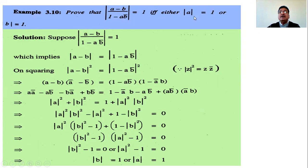Next example: prove that |(a - b)/(1 - ab̄)| = 1 if and only if |a| = 1 or |b| = 1. Since this is an 'if and only if' statement, the proof has two parts. Part 1: assume |(a - b)/(1 - ab̄)| = 1 and prove that either |a| = 1 or |b| = 1.